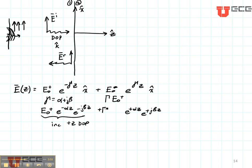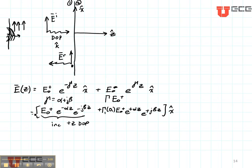Now the magnitude of this reflected field is the reflection coefficient times E zero plus. Which reflection coefficient is this? It's the reflection coefficient at position O one, so it's gamma one at O one times E zero plus, and both of these are polarized in the plus X direction. So there's our equation for the total electric field in region one.